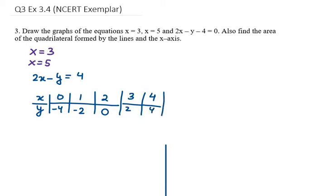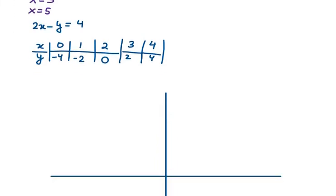So, these are my coordinates for the third equation. Now, we will put these values into the graph paper and then find the area of the quadrilateral formed by the lines and the x-axis. Let's mark these points on the graph paper.